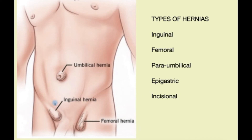Inguinal hernia occurs in the groin. It typically starts above the crease of the groin and tends to grow towards the midline — here we see the lump starting from the corner and moving downwards. If treatment is not done, this tends to get bigger, and in men it would travel down towards the scrotum and increase in size.